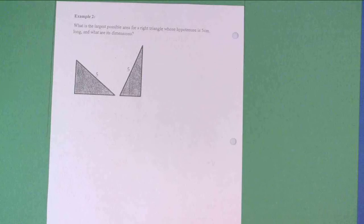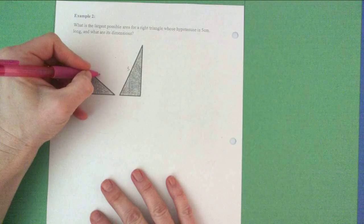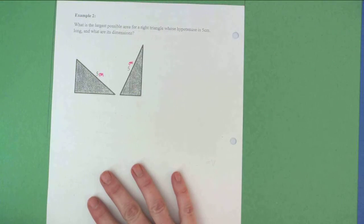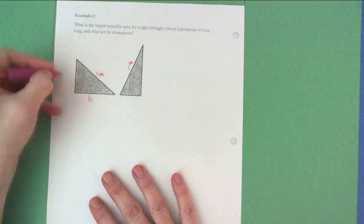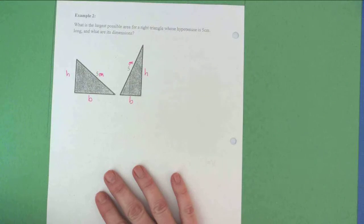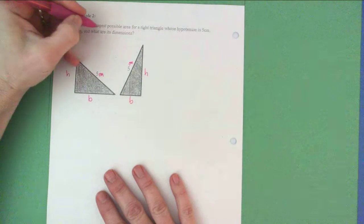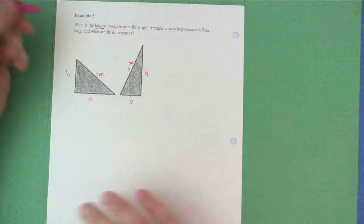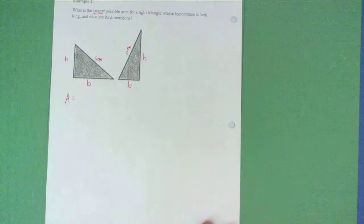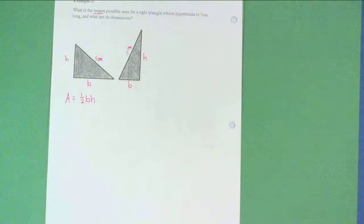What we're really looking for here — you can see that on two different triangles, they have the hypotenuse labeled as five centimeters. So we're looking for the base and the height on any triangle that's going to have a hypotenuse of five, but we want the optimal dimensions that maximize the area. So if we're going to maximize area, we should probably write an area equation. The area equation for a triangle is simple: it's just one-half base times height.